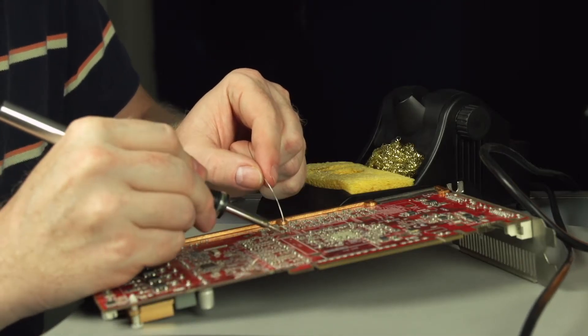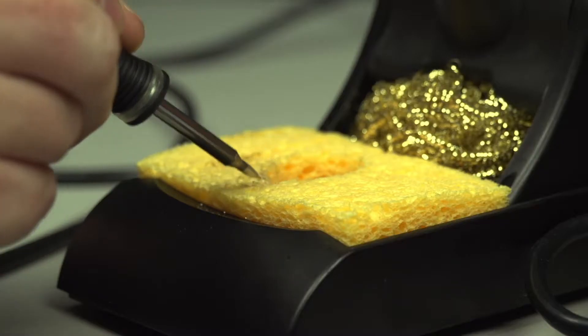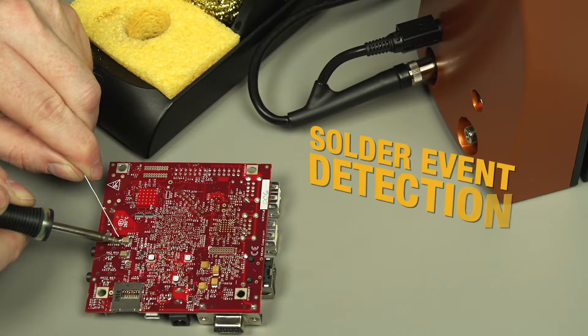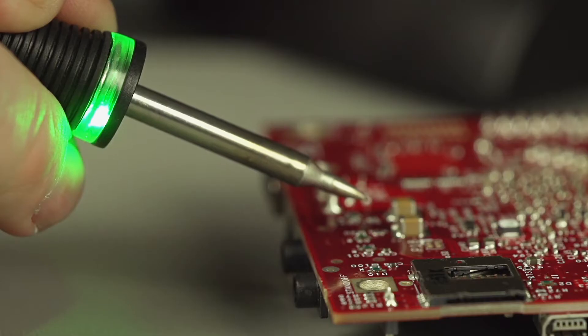Connection Validation provides feedback to the operator via a light ring embedded in the handpiece. Successful intermetallic compound formation triggers a green light, signaling to the operator that the ideal solder joint is created.